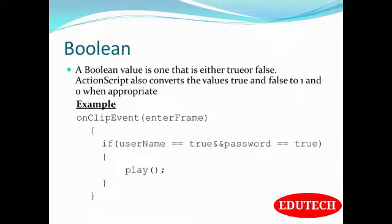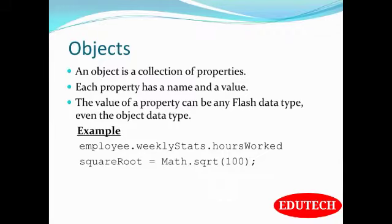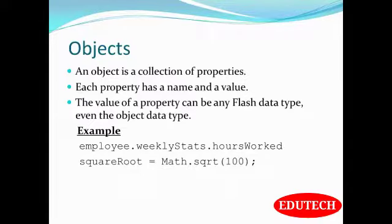Boolean: a boolean value is one that is either true or false. ActionScript also converts boolean values true and false to 1 and 0 when appropriate. Objects: an object is a collection of properties. Each property has a name and a value. The value of a property can be any Flash data type, even the object data type. You can access an object's property using the dot operator.